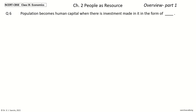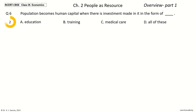Question 6: Population becomes Human Capital when there is Investment made in it in the form of ___. The options are: Education, Training, Medical Care, All of these. Your time to choose. And the answer is: All of these. So, Population becomes Human Capital when there is Investment made in it in the form of Education, Training, and Medical Care.